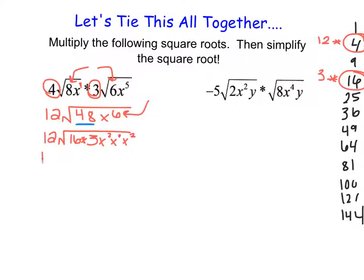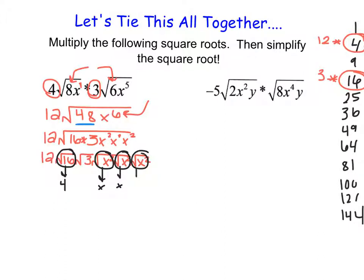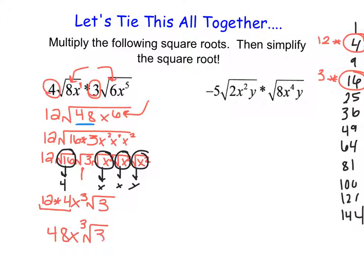Now everything under the root gets its own square root. We have the square root of 16, the square root of 3, and each x squared under its own root. The square root of 16 is 4, and each square root of x squared evaluates to x. So we have 12 times 4x cubed, all times the square root of 3. Since 3 is not divisible by any perfect square other than 1, it's fully simplified. Multiplying the outside numbers: 12 times 4 gives us 48x cubed times the square root of 3.